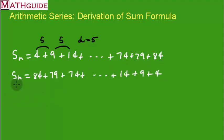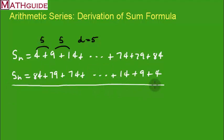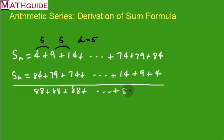If we took those two series and added them together, we're going to get 88, 88, 88, 88, and so on. It's a lot easier to add things when they're the same than when they're changing, so this is kind of convenient.